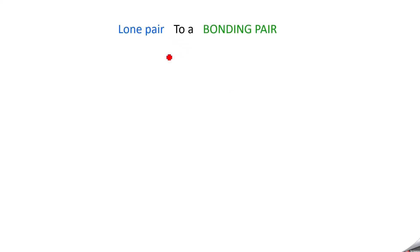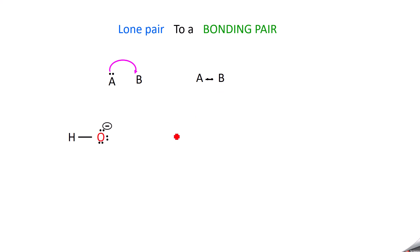First, the lone pair is converted to a bonding pair. Take atom A with one lone pair and atom B. This lone pair is shifted to B, so it comes in the middle between A and B and becomes a bonding pair, which is represented as a bond between A and B. So the lone pair present on A becomes a bonding pair between A and B.